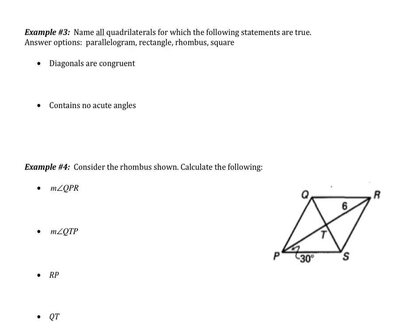Name all quadrilaterals for which the following statements are true. Your options are parallelogram, rectangle, rhombus, and square. The first statement: the diagonals are congruent. That's not a basic property of parallelograms and not a property of a rhombus. It is a property of a rectangle. And since a square is a rectangle, a square will also contain this property.